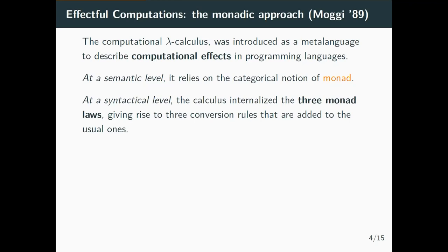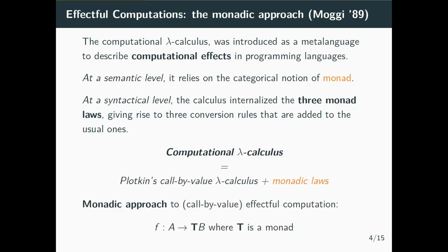The three monad laws from the categorical definition of monad are considered as three conversion rules added to the usual reduction rules of lambda calculus. It is very common in the literature to see computational lambda calculus as Plotkin's call-by-value lambda calculus plus the addition of oriented monadic laws.